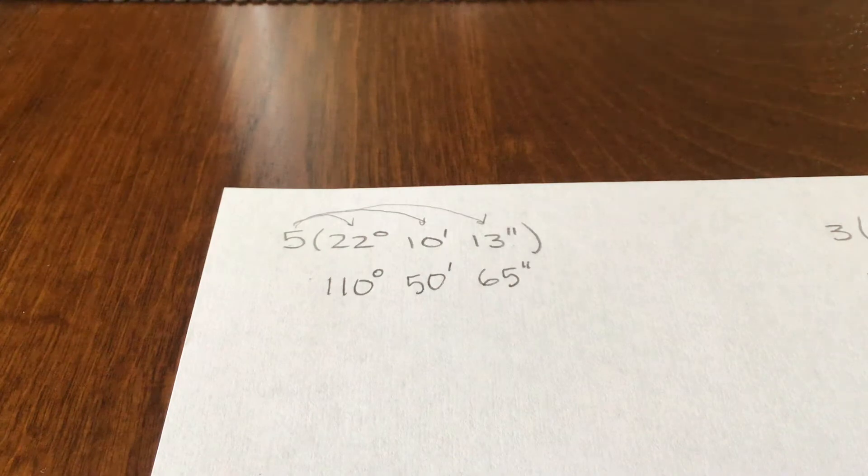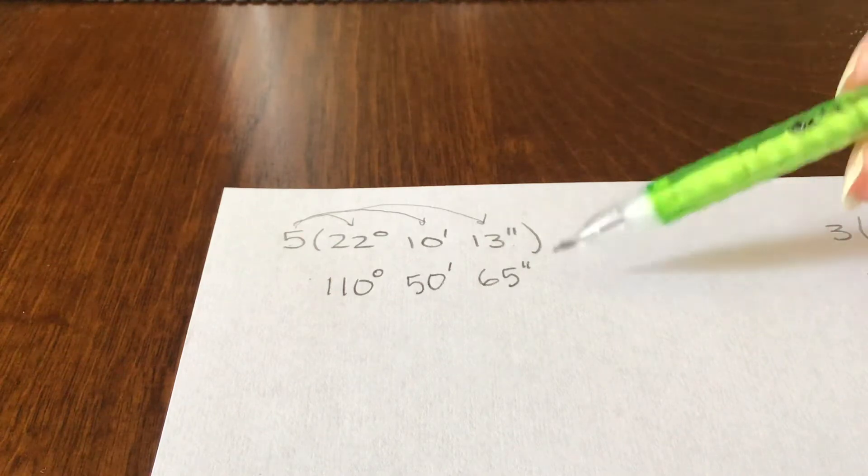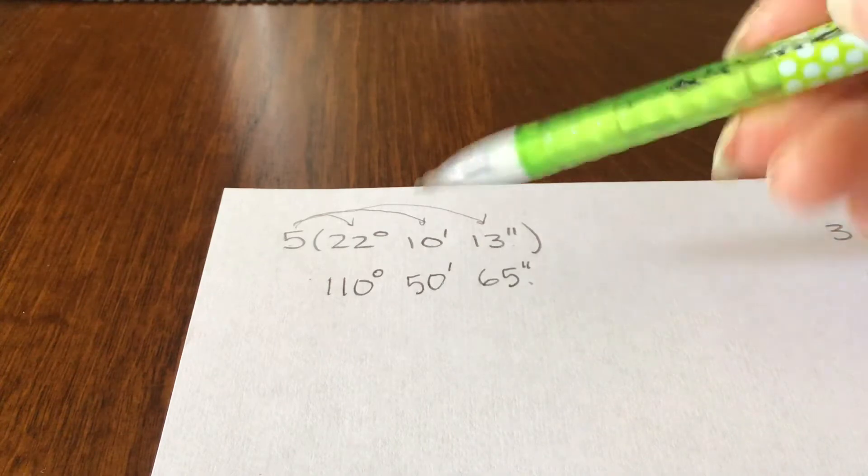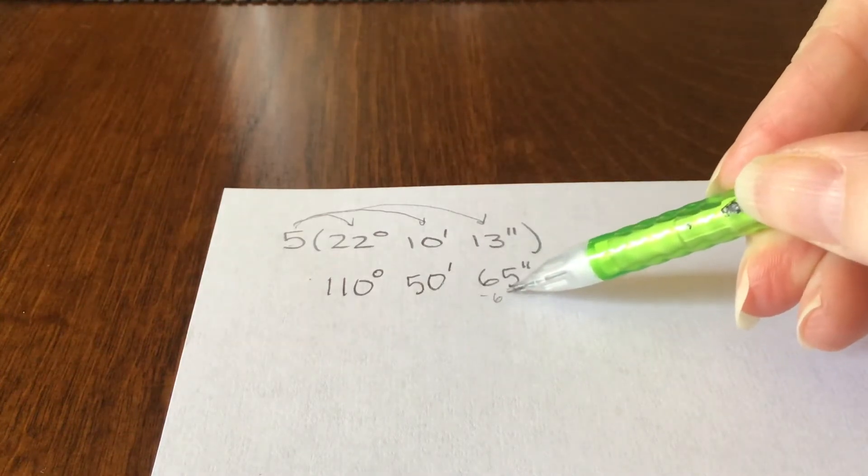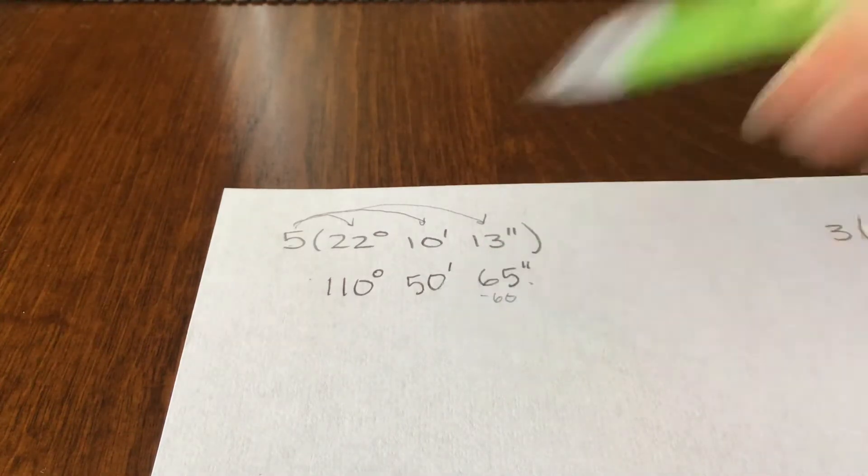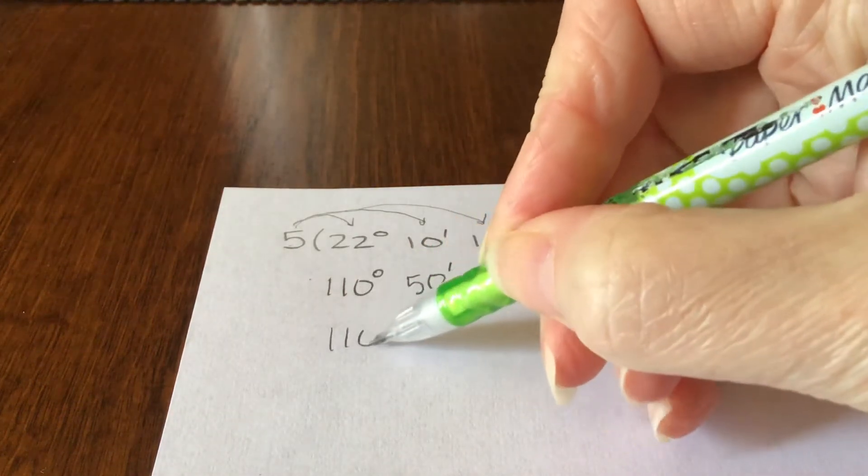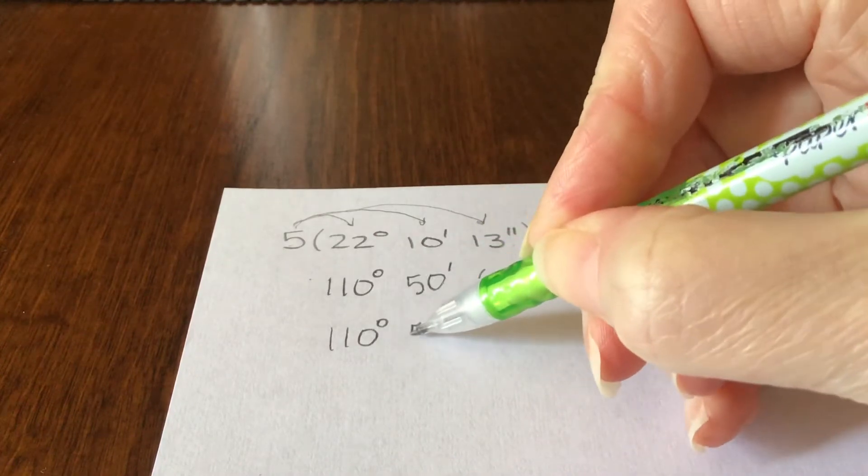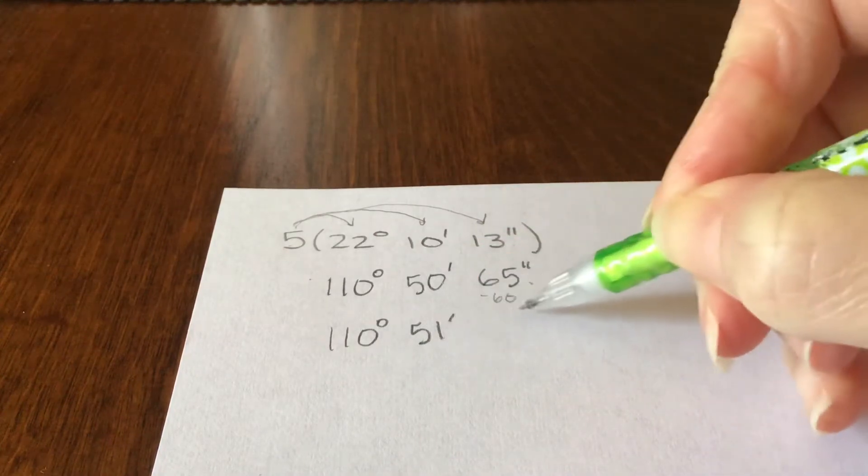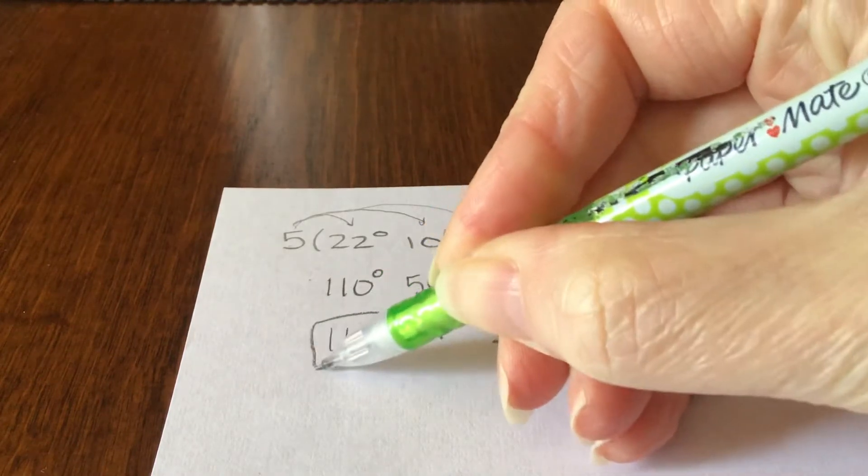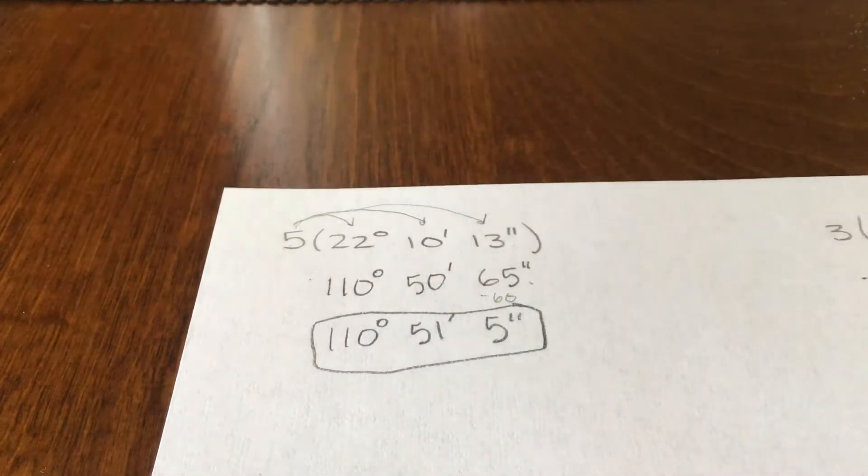Now at this point we don't really want to leave it like that. We need to massage it a little bit. That 65 seconds is too big. 65 seconds, we can take 60 of them away to make another minute. So we're regrouping, reorganizing a little bit to make our answer better. So this would be the correct answer.